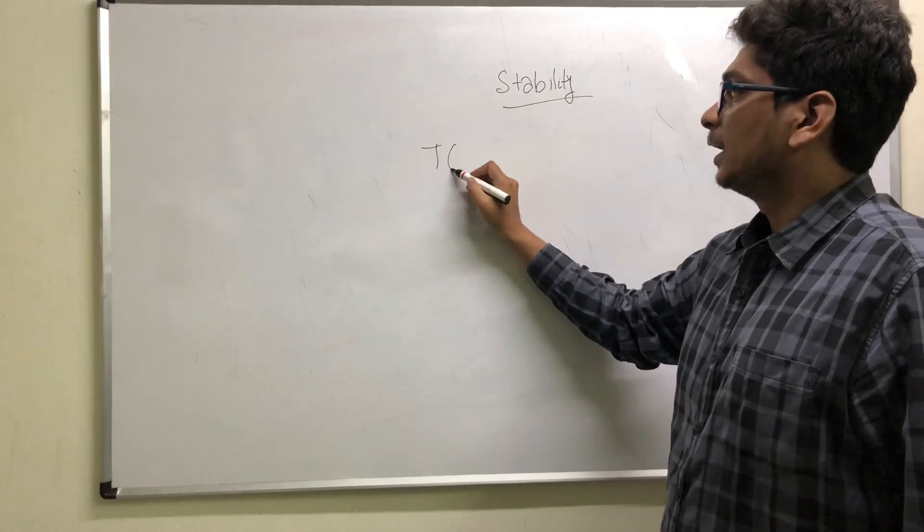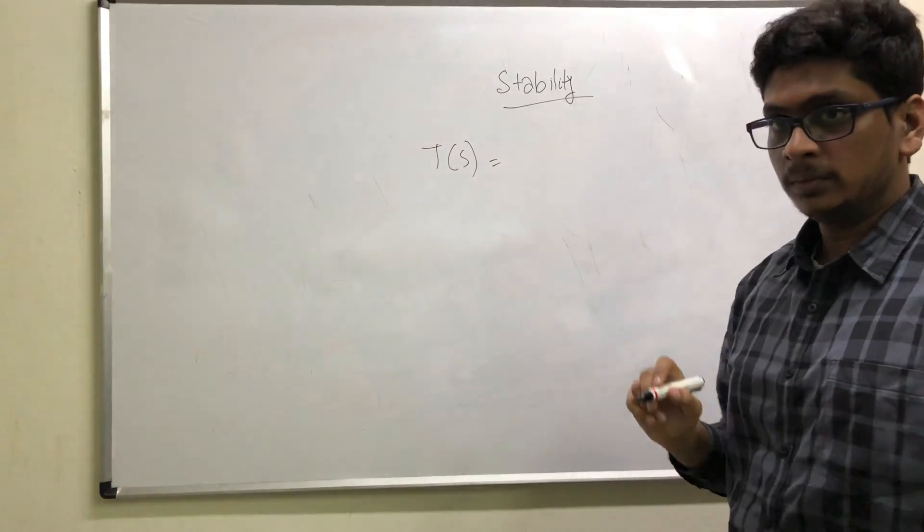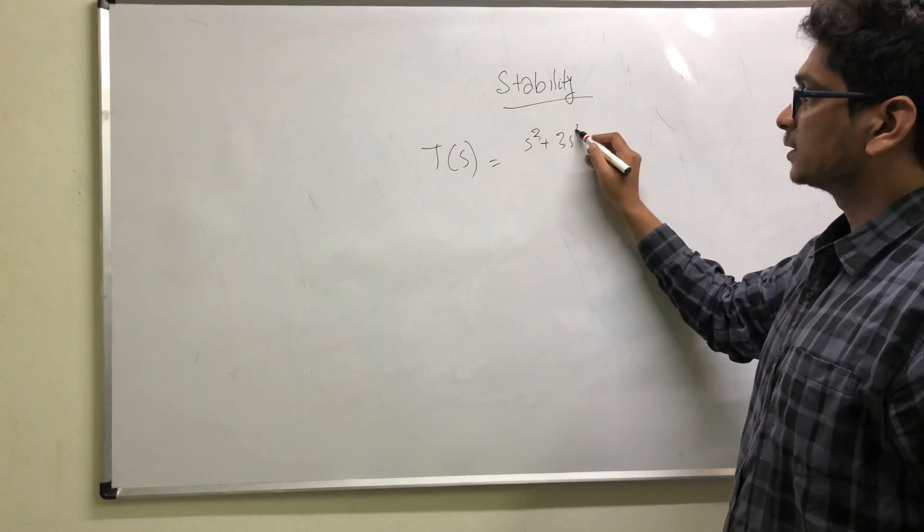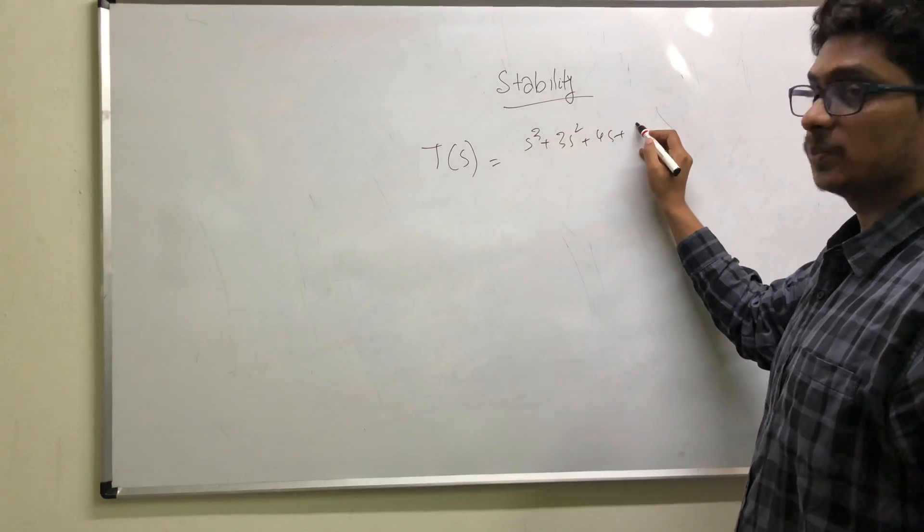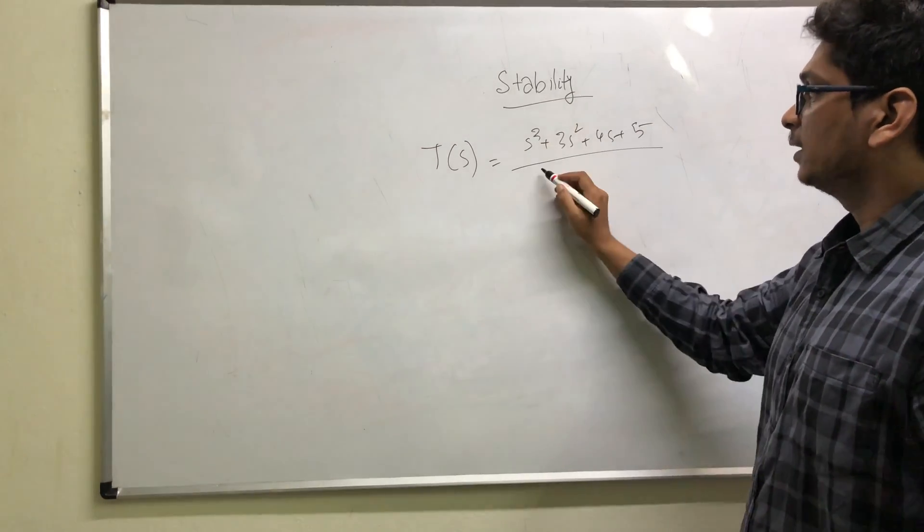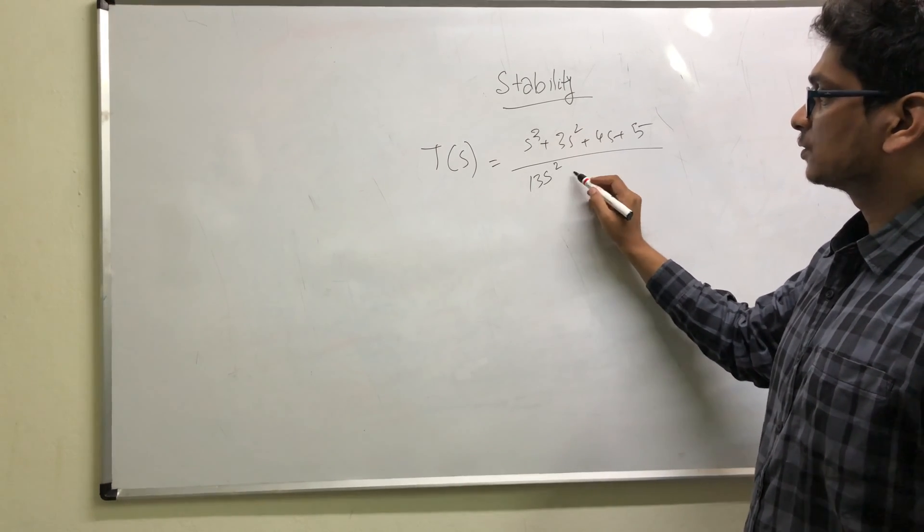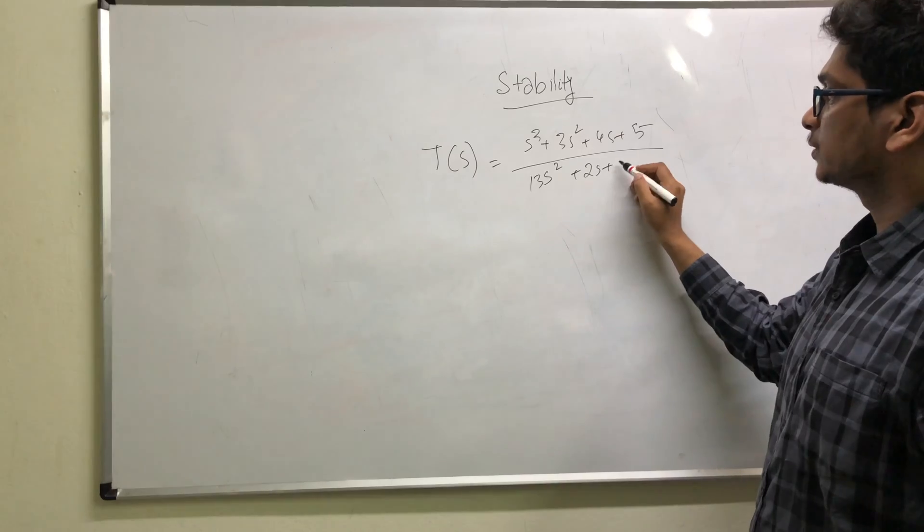Stability. I have a transfer function: s³ + 3s² + 4s + 5 over 13s² + 2s + 3. I'm just throwing numbers in there.